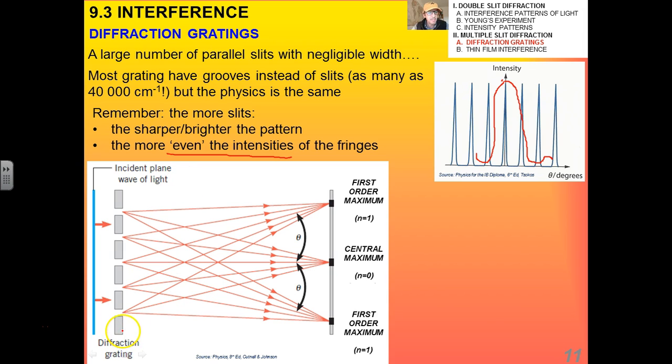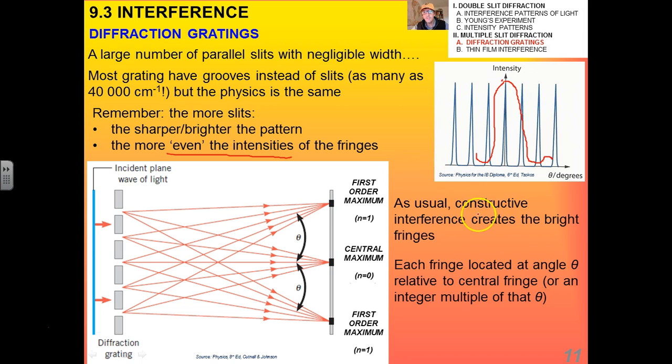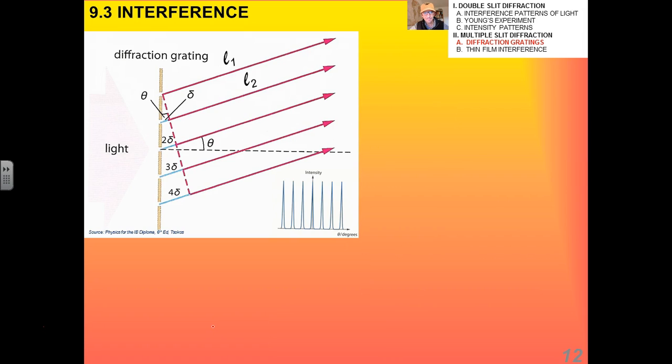So here's a case where I have one, two, three, four, five different openings. We're talking about 40,000 per centimeter. But the physics is the same. As usual, constructive interference creates the bright fringes. Each fringe is located at an angle theta, as before, relative to the central fringe, or an integer multiple of that. The basic diagram is still the same, where theta is still that angle relative to the central fringe, or that central line.